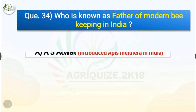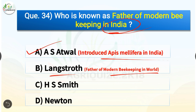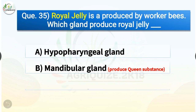Question number thirty-four: who is known as father of modern beekeeping in India? Options are A.S. Atwal, Langstroth, H.S. Smith, or Newton. The correct answer is option A, A.S. Atwal. A.S. Atwal is the father of modern beekeeping in India and introduced Apis mellifera in India, whereas Langstroth is the father of modern beekeeping in the world.